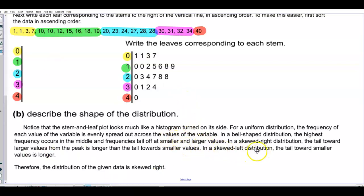In a skewed right distribution, the tail toward larger values from the peak is longer than the tail toward smaller values. And in a skewed left distribution, the tail towards the smaller values is longer. Therefore, the distribution of the data is skewed right.